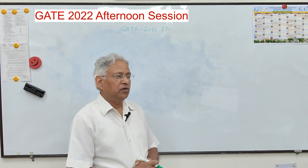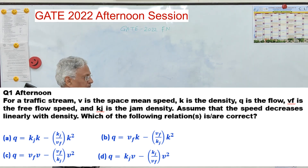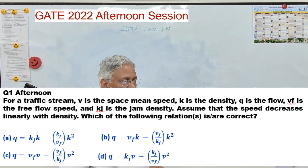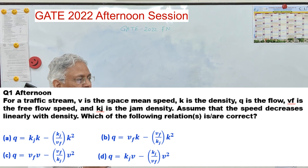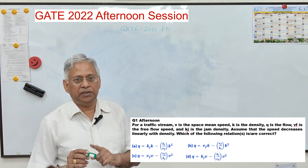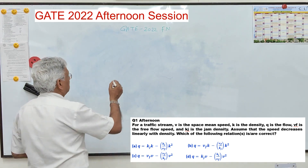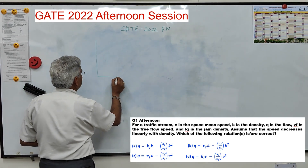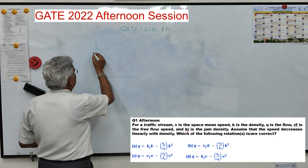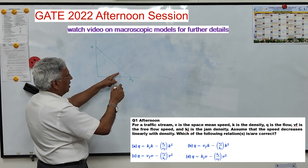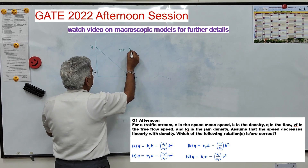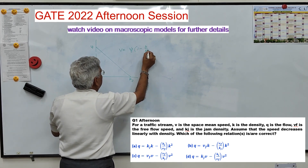The first question is: for a traffic stream, v is the space mean speed, k is the density, q the flow, vf the free flow speed, kj the jam density. Assume that speed decreases linearly with density. This is the Greenshield equation, where v = vf × (1 - k/kj).